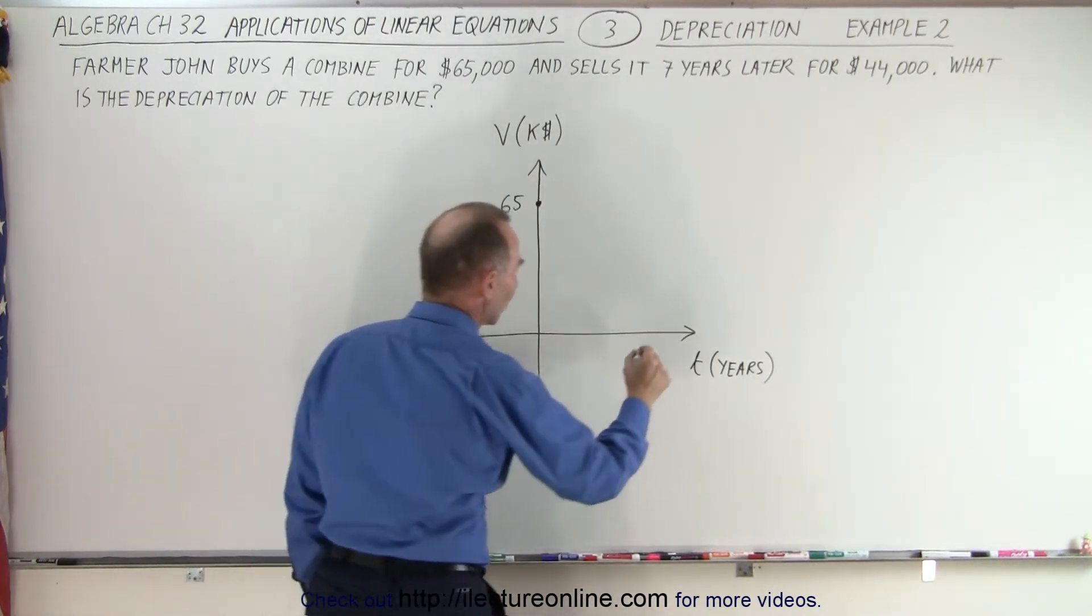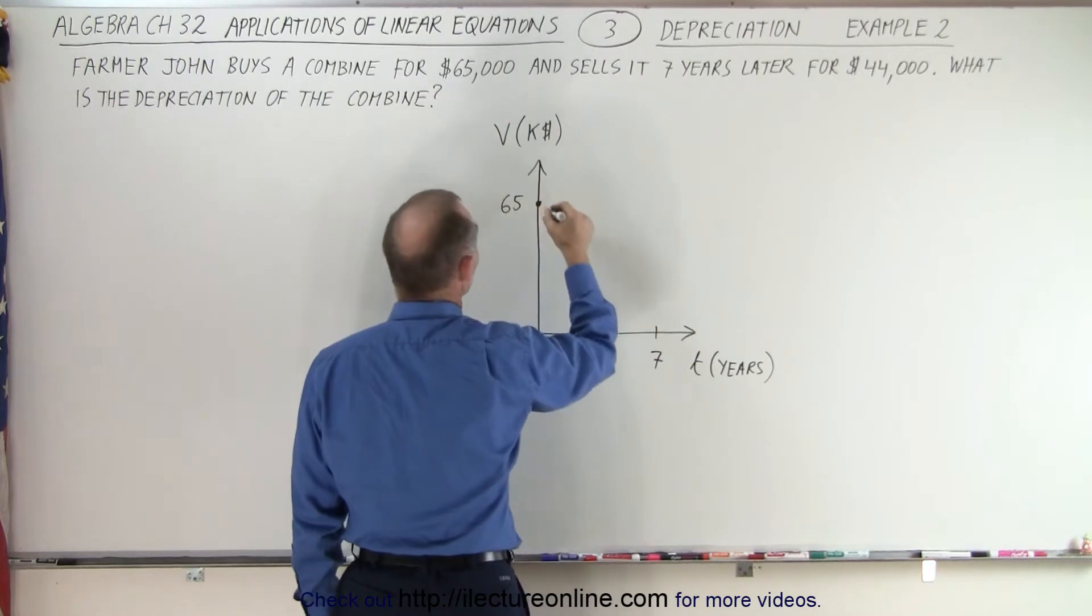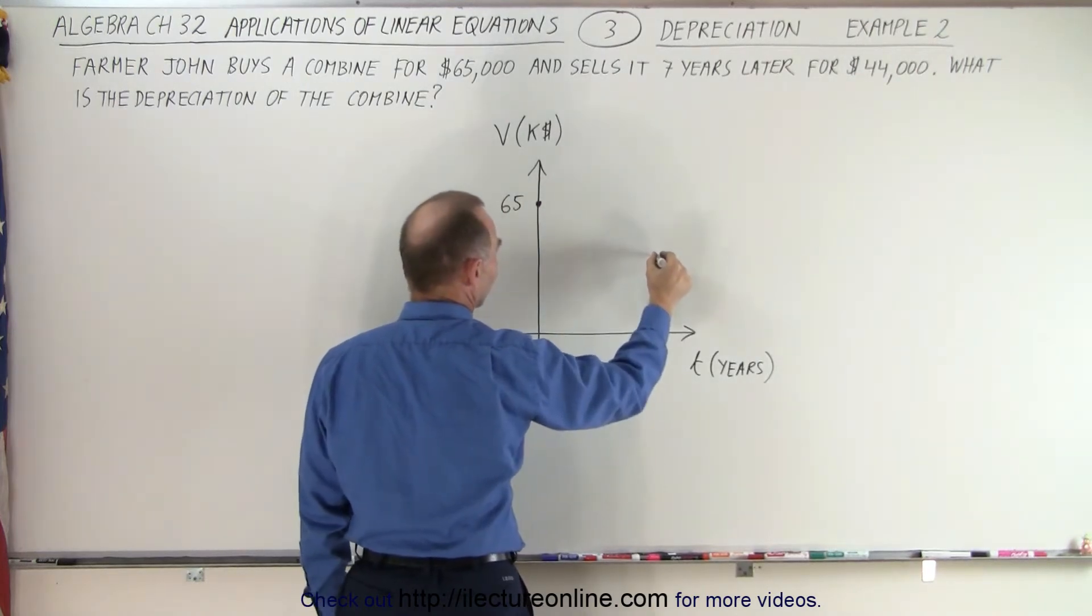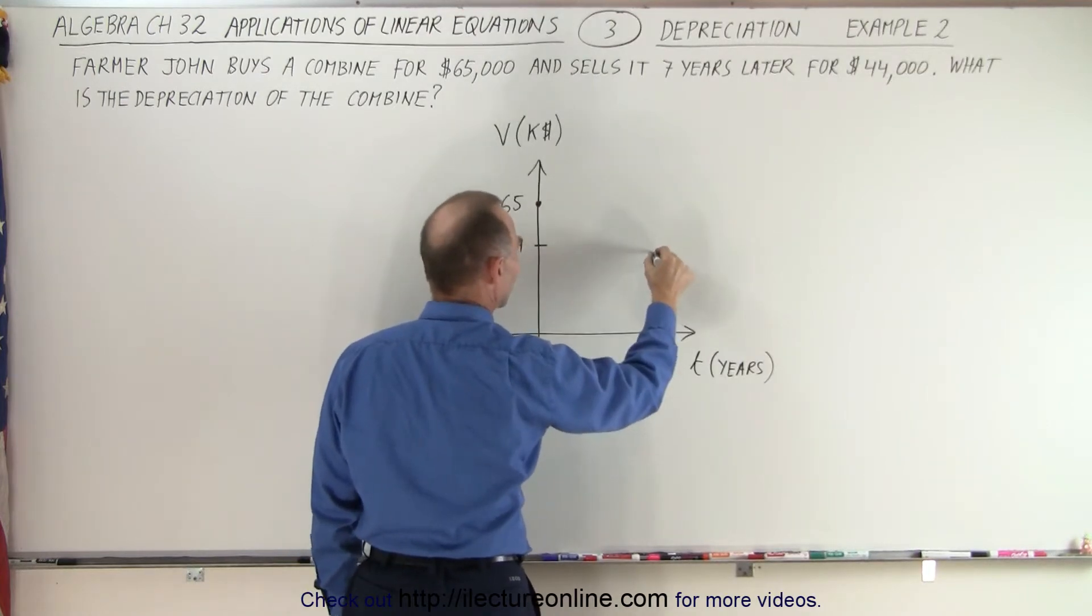And then seven years later, Farmer John sells it for $44,000. So we find $44,000, which is about here, and then make a point right there.